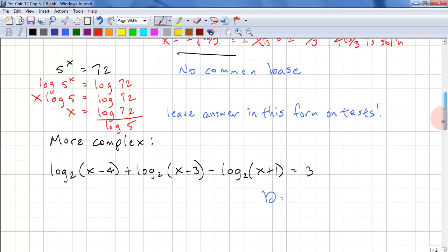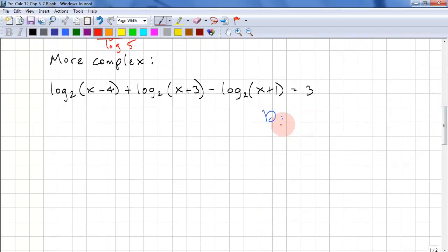Let's look at some more complicated examples. So we have to look for the most restrictive domain. Here we have x > 4, x > -3, x > -1. So x > 4 is the most restrictive.